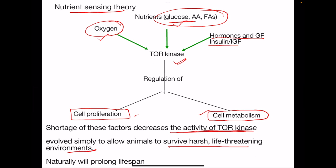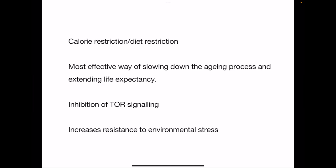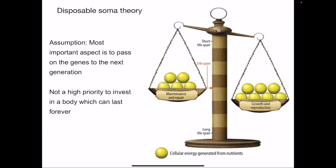Based on this theory, it has been found that calorie restriction and diet restriction is one of the most effective ways of slowing down the aging process and extending life expectancy. By overconsumption of calories, we are not just becoming obese and accumulating predisposition to diseases, we are also accelerating our aging process. In fact, calorie restriction and exercising are the two main ways shown to slow down the aging process.